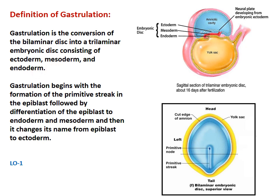The trilaminar germ disc consists of ectoderm, mesoderm, and endoderm. This is the superior view of the germ disc and the cut section showing three layers: the blue layer on top, the middle red one developing, and the lower yellow one. This three-layered disc is the end result of the third week, and at this stage it is called the gastrula.